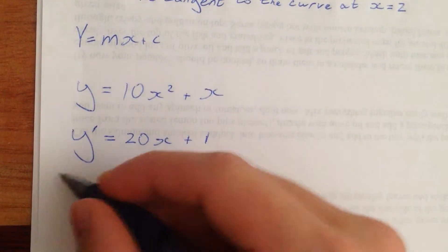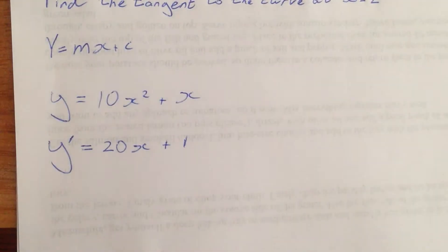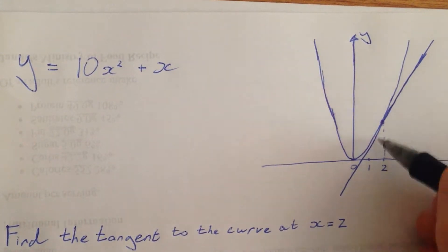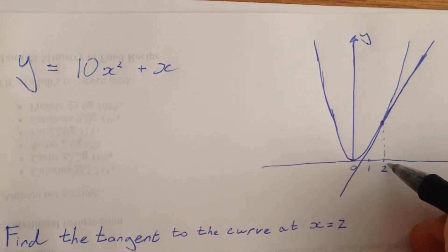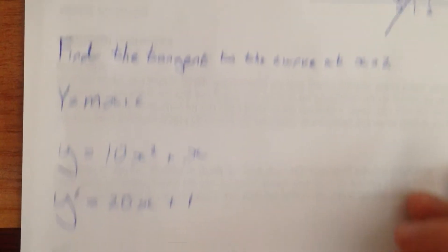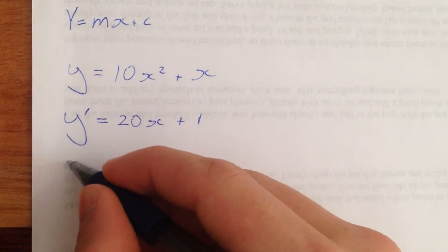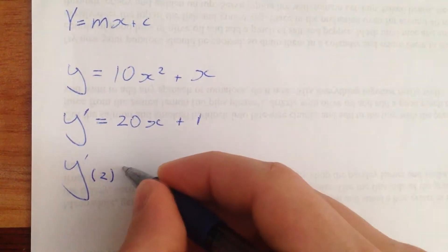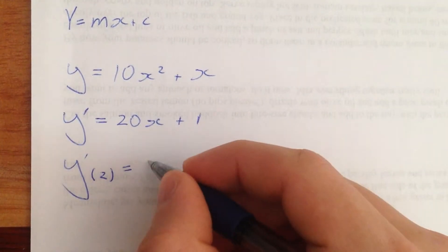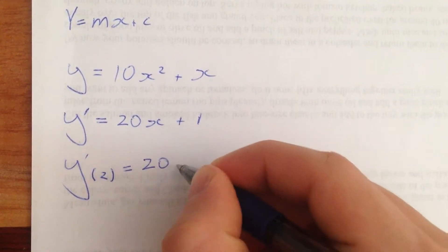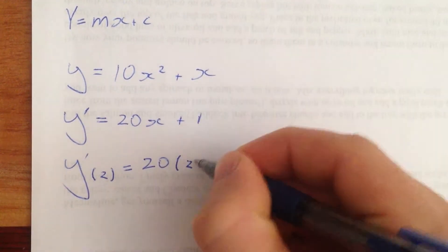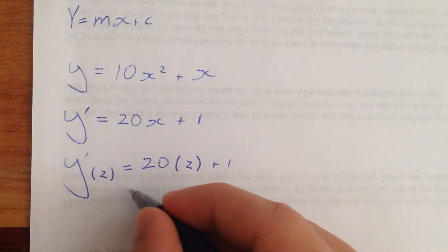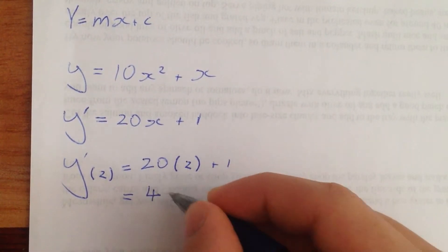So now what we need to do is evaluate this. So we've got to evaluate what the gradient of the curve and this line are going to be at the point x equals 2. So what is the gradient at x equals 2? This is easy. We just sub it in. 20 times 2 plus 1 equals 41.